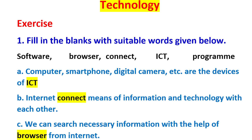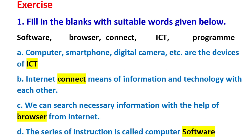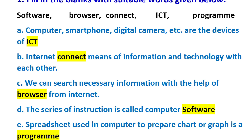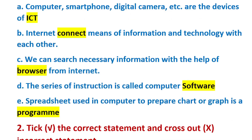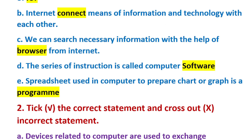B) Internet connects means of information and technology with each other. C) We can search necessary information with the help of a browser on the Internet. D) The series of instructions is called computer software. E) Microsoft Excel spreadsheet is used in a computer to prepare a chart or graph — that is a program.